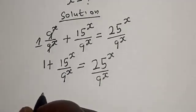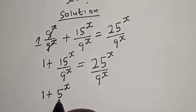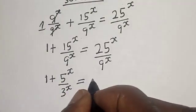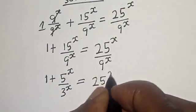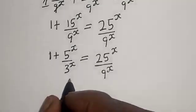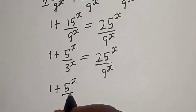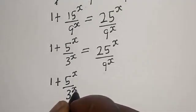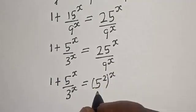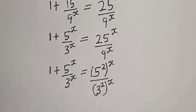Now we can reduce this. We have 1 plus (15/9)^s is equal to (25/9)^s. This simplifies to 1 plus (5/3)^s is equal to (5^2)/(3^2) all raised to the power of s.